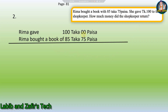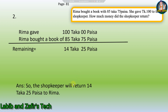Rima gave 100 Taka 0 Persha, and Rima bought a book for 85 Taka 75 Persha. For the remaining amount, taking 100 minus 75 gives 25, carry 1. Then 5 plus 1 is 6, so 86, and 100 minus 86 is 14. So 14 Taka 25 Persha. Answer: The shopkeeper will return 14 Taka 25 Persha to Rima.